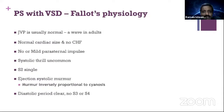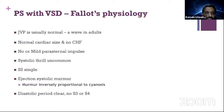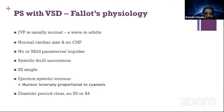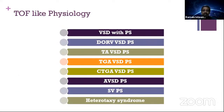In a typical tetralogy-like physiology examination, almost all carry the same findings. JVP is absolutely normal — maybe a prominent A wave in adults. Commonly there is no cardiac displacement, no heart failure, no or mild parasternal impulse — very rarely beyond 2+/3+. Systolic thrill is uncommon. S2 is almost always invariably single. Ejection systolic murmur — the murmur is inversely proportional to cyanosis. Diastolic period is clear, no S3 or S4. One murmur commonly, generally an early peaking murmur, and single S2. This is what you find in a typical common garden tetralogy.